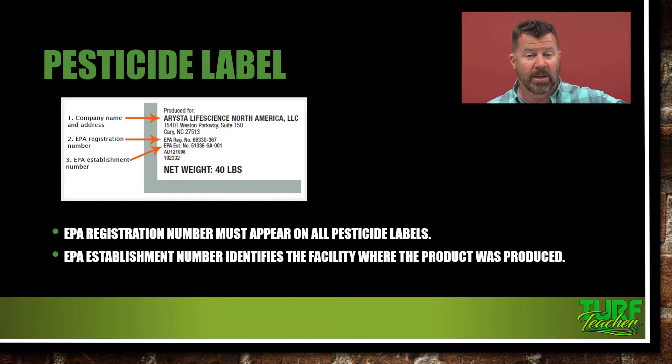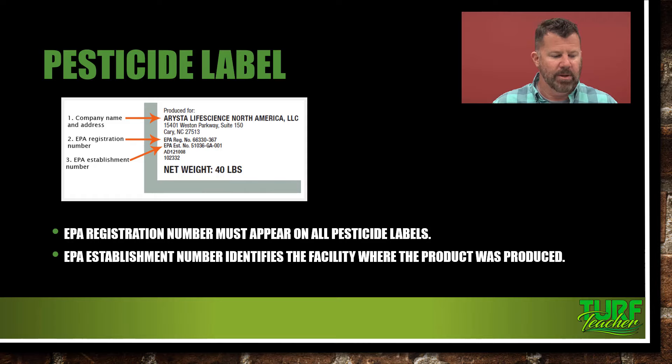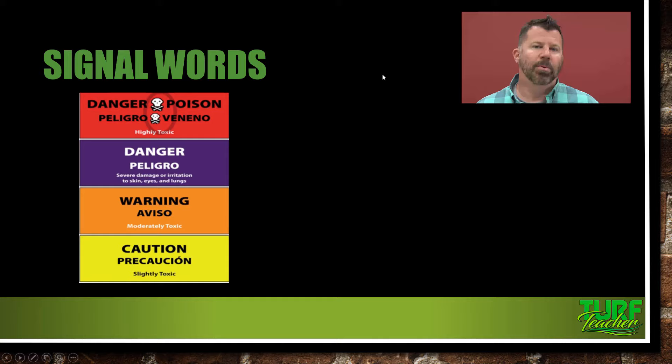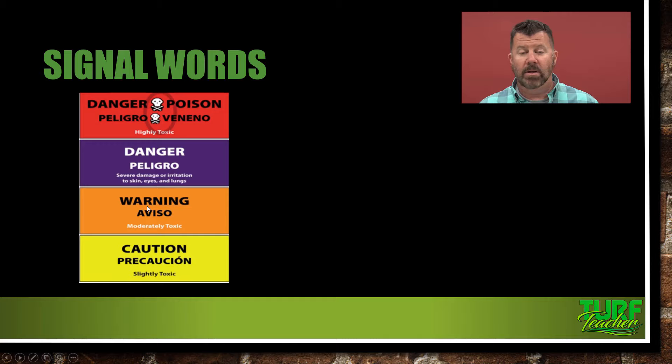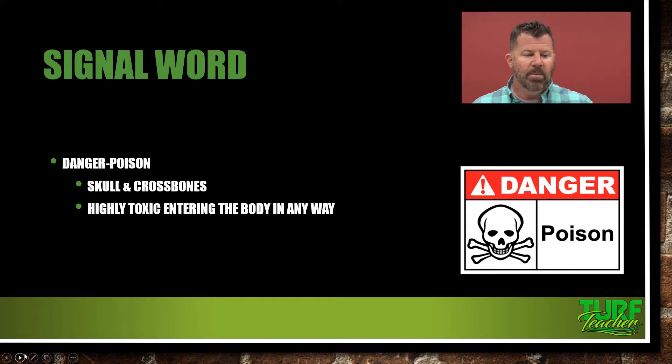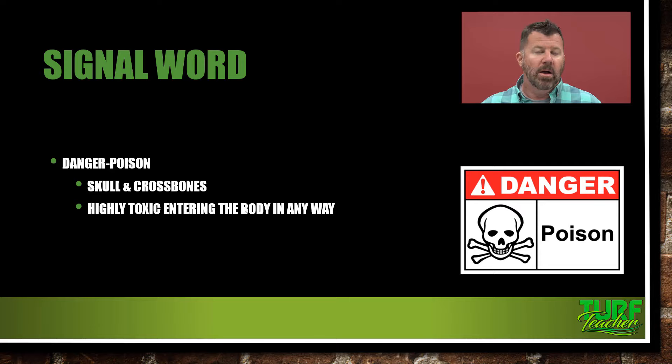Here are our signal words. Danger/Poison — if it's danger/poison, it always must have 'Peligro' in Spanish alongside it, and it will always have the skull and crossbones. It is highly toxic by any route of entry into the body, whether through skin (dermal), eyes, mouth, or absorption.